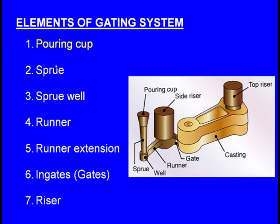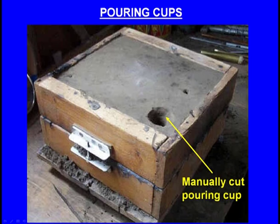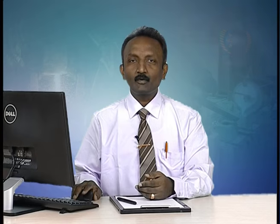Now let us see the design of the pouring cup. Here we can see a moulding box with the cope and drag. This is a manually cut pouring cup. In most small-scale and some medium-scale industries, pouring cups are cut manually — there are no hard and fast rules on how to cut them. The limitation is that sometimes one may cut too large or too small.